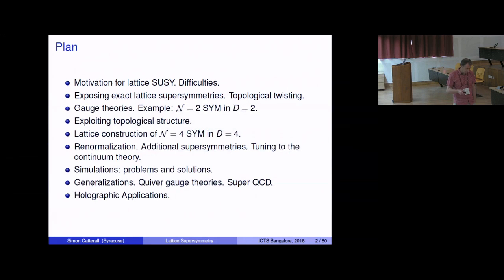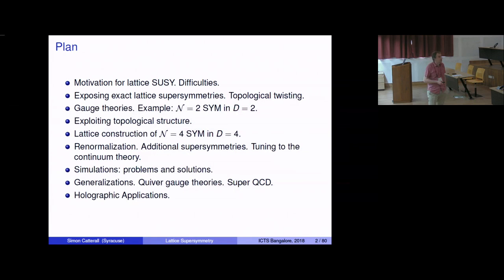These lectures are meant to be fairly pedagogical. I'll start off with a toy model — essentially supersymmetric quantum mechanics — and show how it works in that simple situation. Then we'll move on to discuss gauge theories, starting with the prototypical example: N equals two Yang-Mills theory with four real supercharges in two dimensions. Once we understand how to do that, the transition to more complicated and interesting theories in higher dimensions is relatively straightforward.